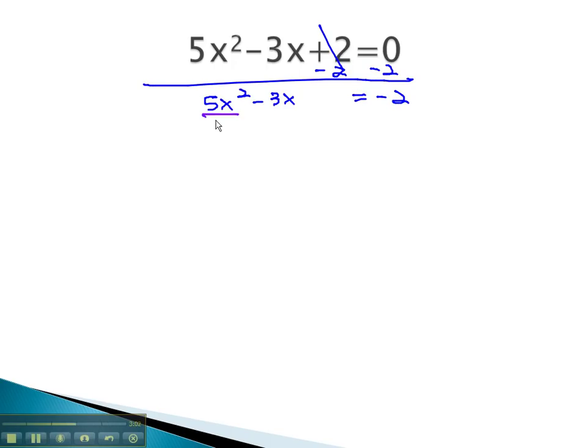Next, we must divide by a so the x² has no number in front of it. Remember, we divide every term by 5, so we get x² - 3/5 x = -2/5.